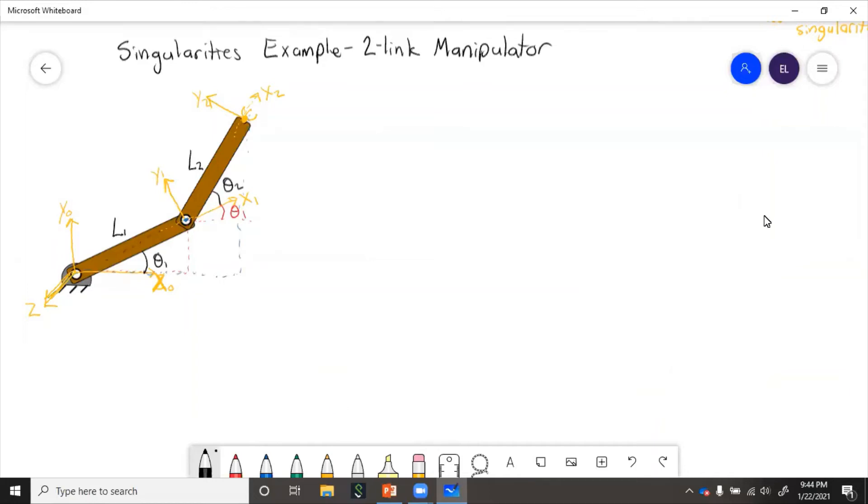In this example, we will find the singularities of the two-linked manipulator. So just looking at this manipulator, we'll say method one is inspection, or we can do method two, formula.